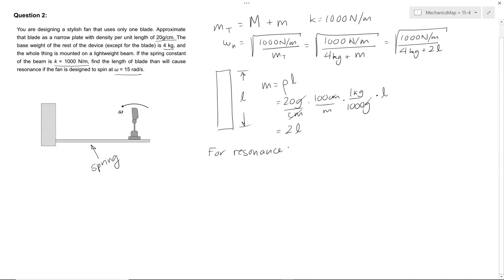For resonance, we know that omega naught has to equal omega N. In this case, we're given that omega naught, our fan speed that we are designed for, is 15 rads per second. So we're going to find that omega naught equals 15 rads per second equals the square root of 1,000 newtons per meter divided by 4 kilos plus 2L.